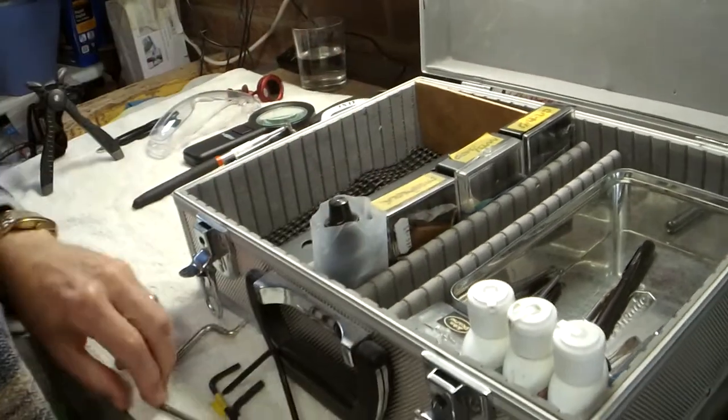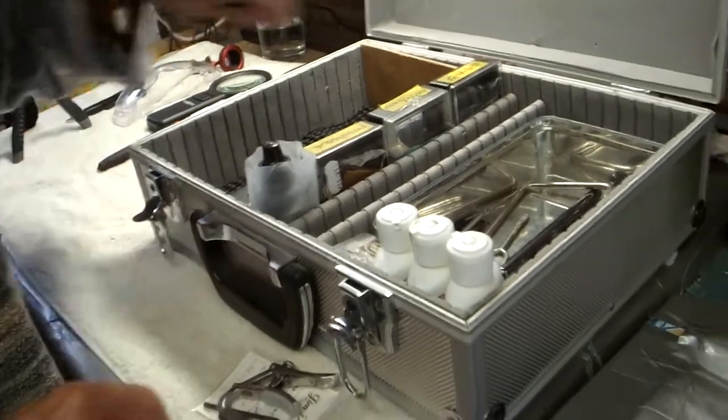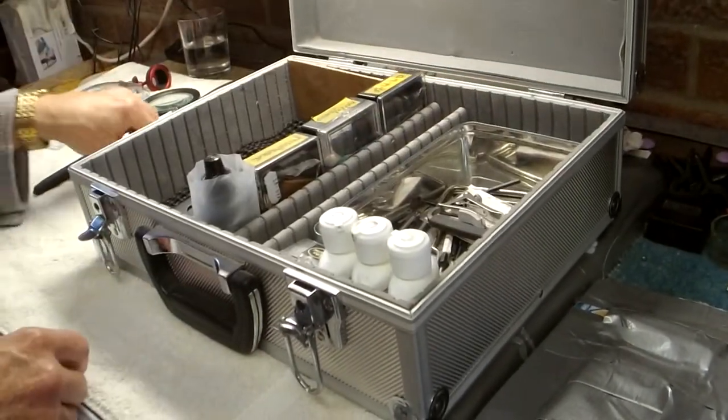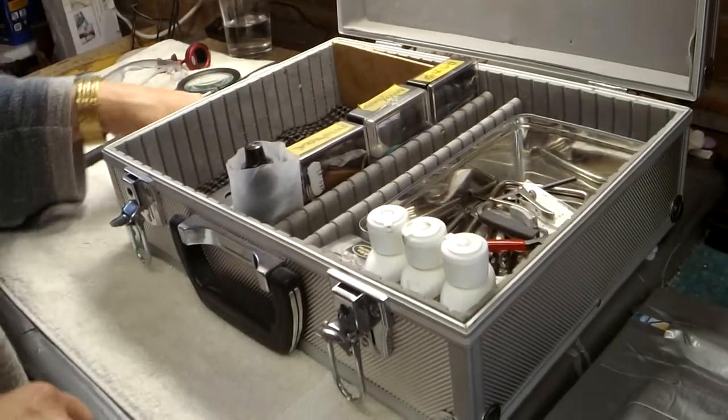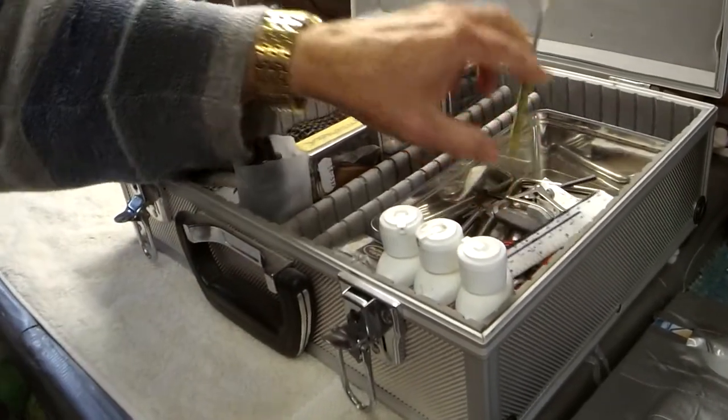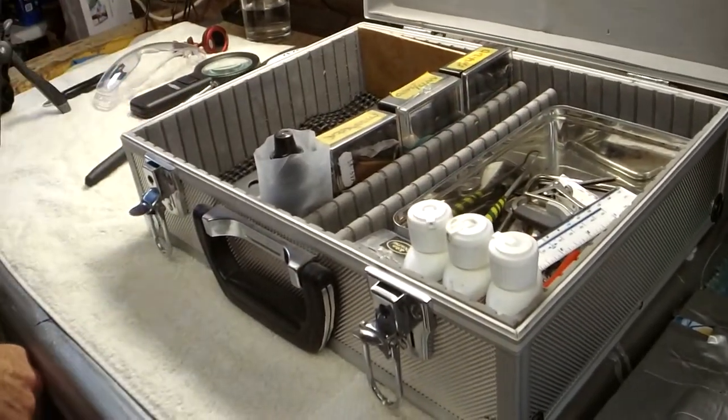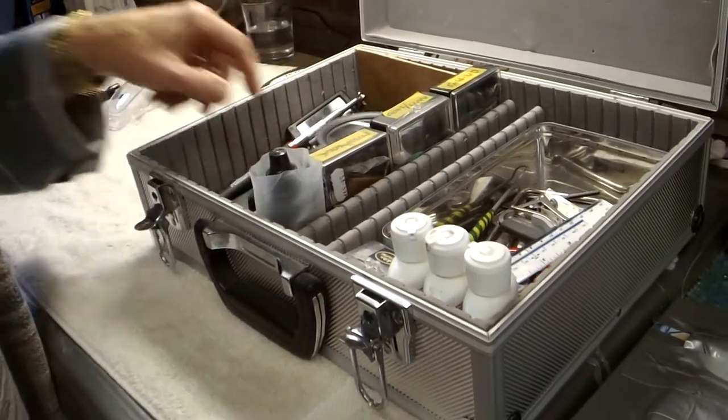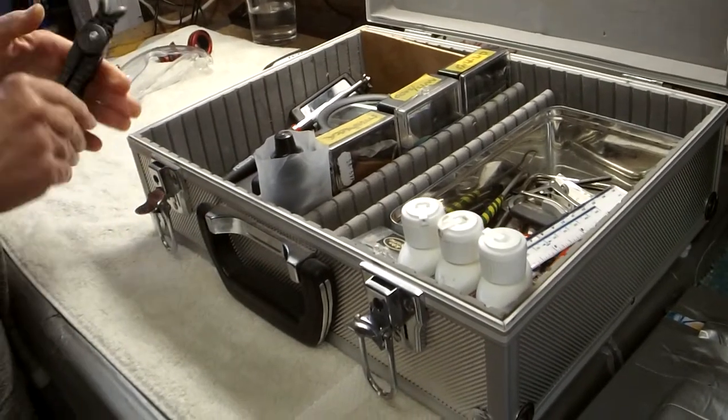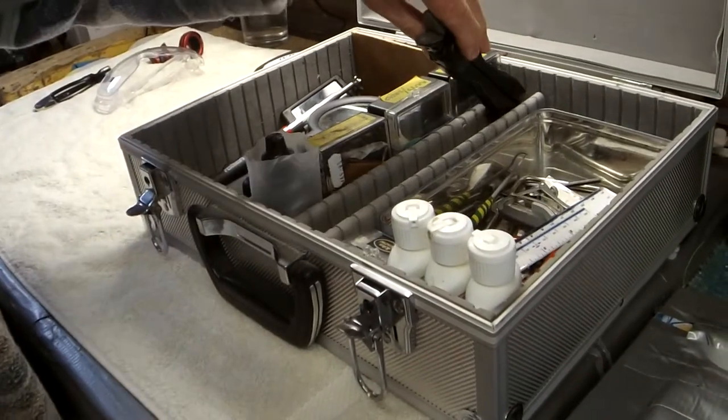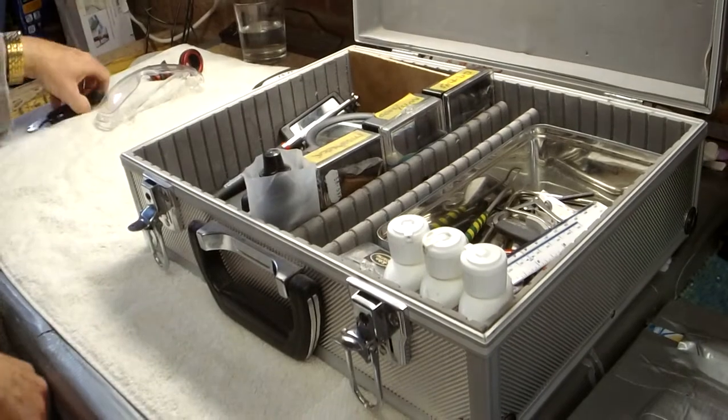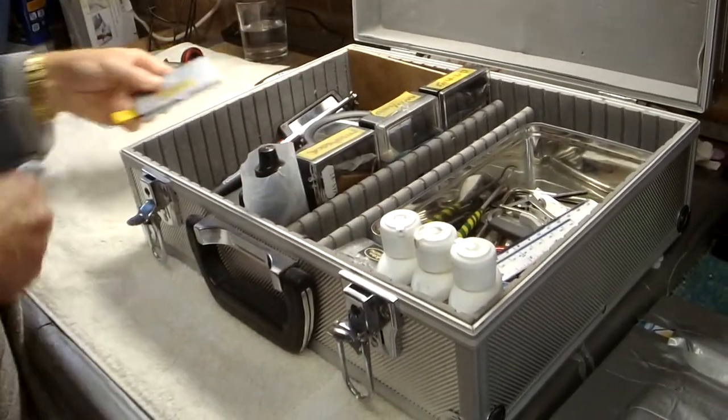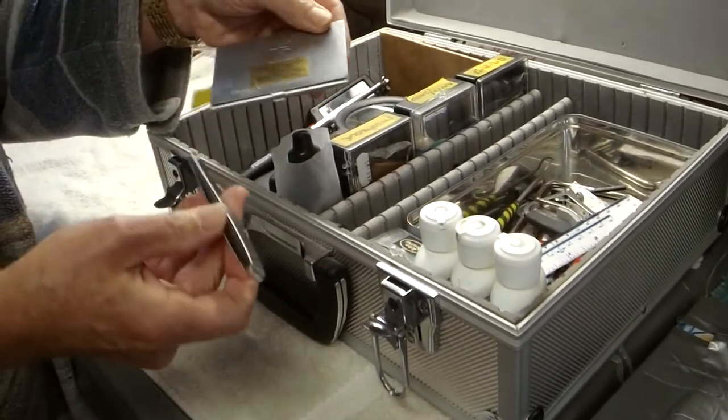So there we are with my truss rod Allen keys, long-nose pliers, rulers, dental probe, inspection mirror, magnifying glass, and these two vital things: my neck support and my Pro Winder tool, plus my two measuring devices.